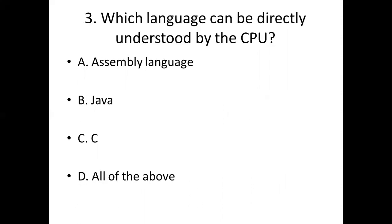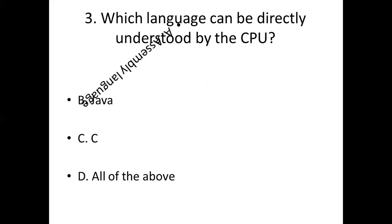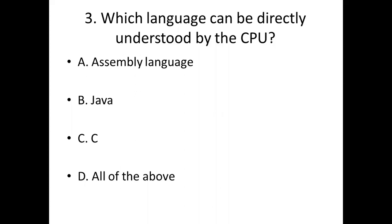Third bit: Which language can be directly understood by the CPU? Option A: Assembly language. Option B: Java. Option C: C. Option D: All of the above. Answer: Option A, assembly language.